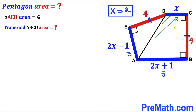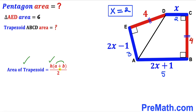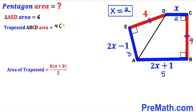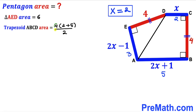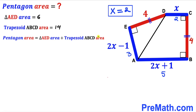For trapezoid ABCD, we use: Area = h × (a + b) / 2. The height h is 4, base a is 2, and base b is 5. So Area = 4 × (2 + 5) / 2 = 2 × 7 = 14 square units.